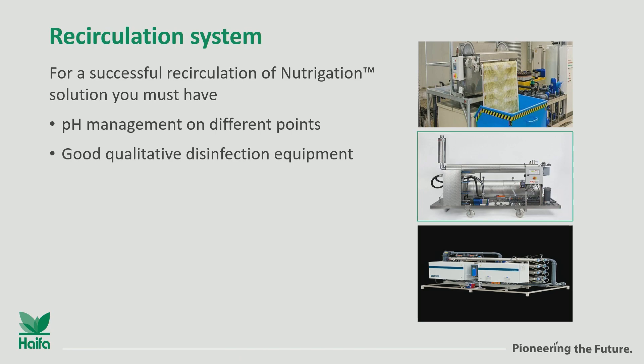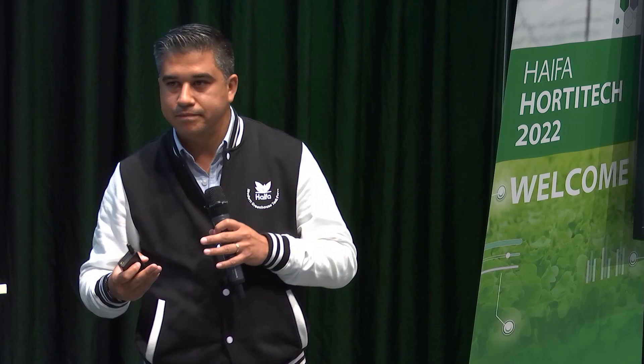For a successful recirculation it is necessary to consider some parameters. Manage the pH in different points. We have in these recirculation systems — closed systems — water and nutrients everywhere. We need to manage pH in different points. And always good to search for very qualified disinfection equipment and disinfection systems. We saw the difference in the characteristics in the presentation before.